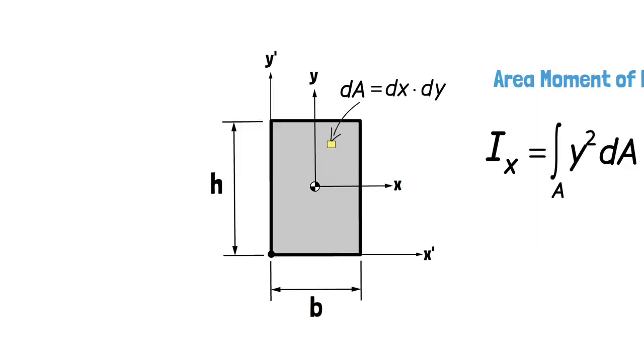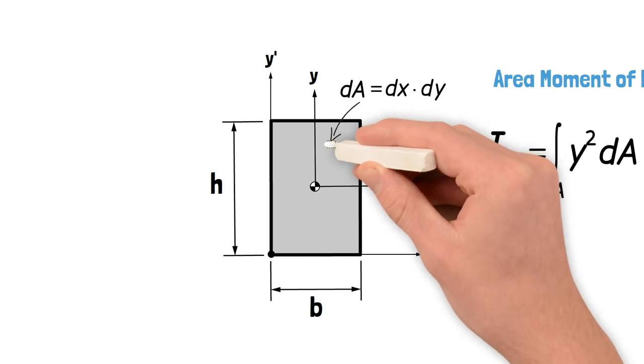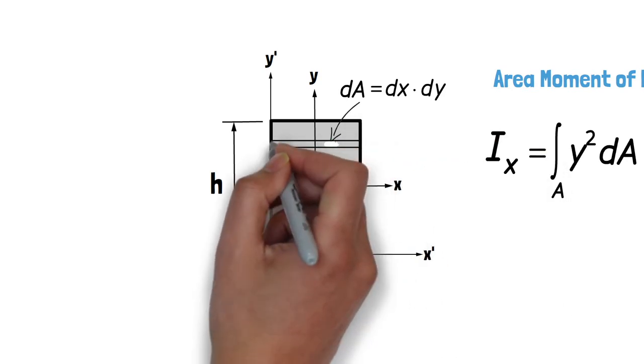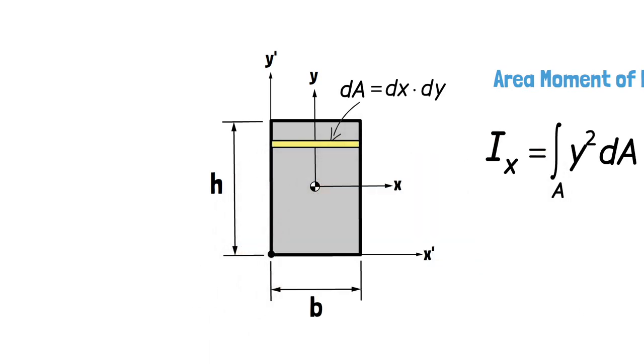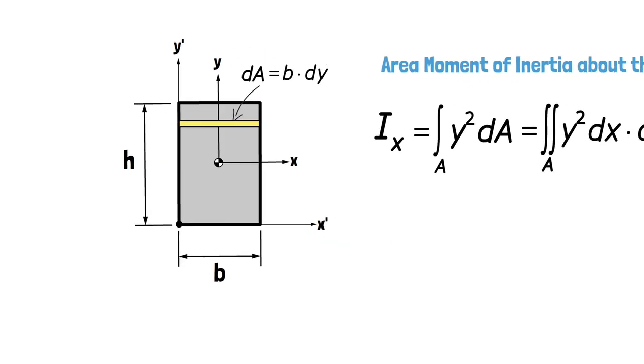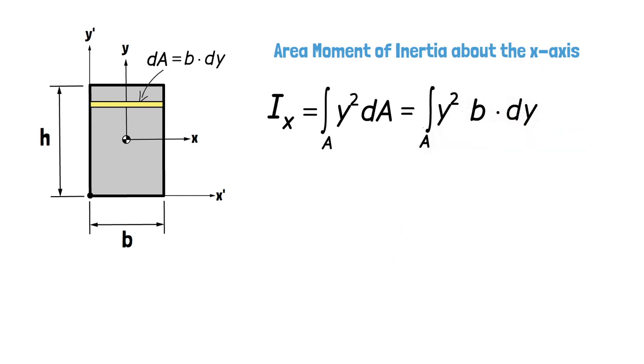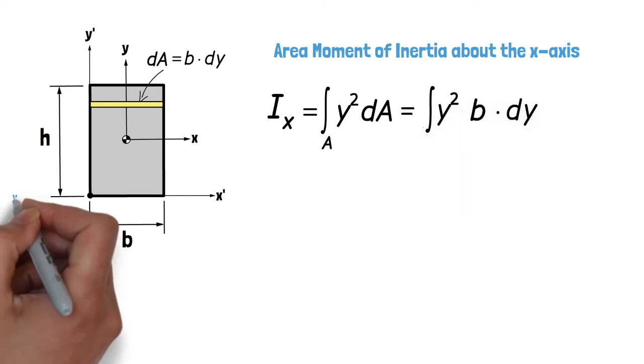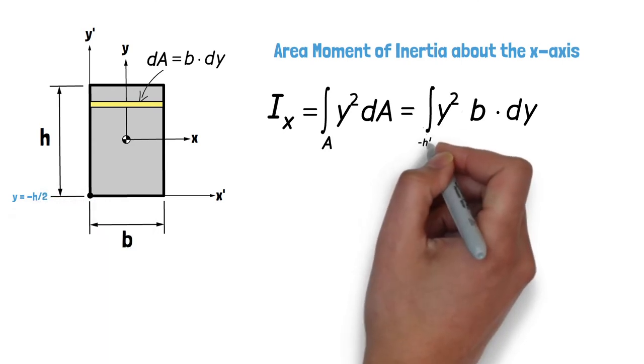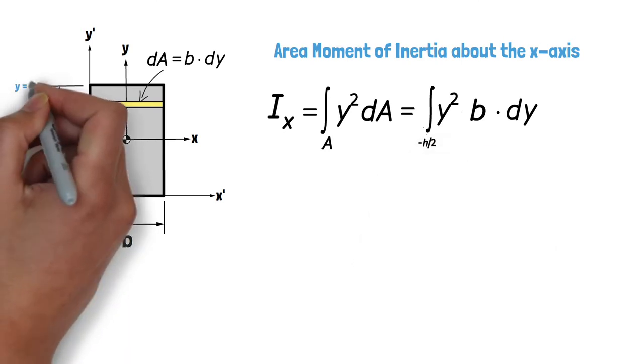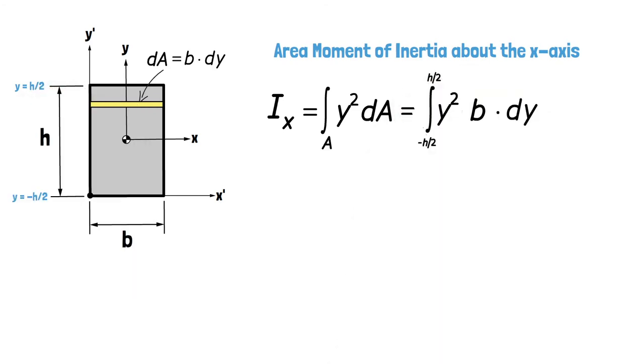Indeed, we can take advantage of the fact that y squared does not vary across the width of the rectangle and expand our differential element across the entire width of the section. dA thus becomes b times dy, which reduces our integration to a single integral, as we do not need to worry about translating the differential element in the x direction anymore. In order to encompass the entire domain of the rectangle, we need to integrate between the limits of y equals negative h divided by 2 and y equals positive h divided by 2. This leaves us with the following definite integral.